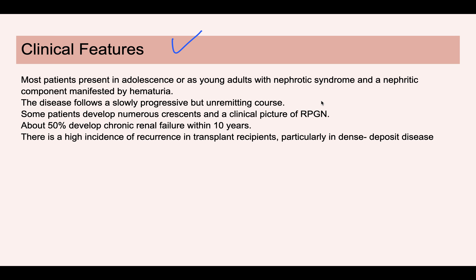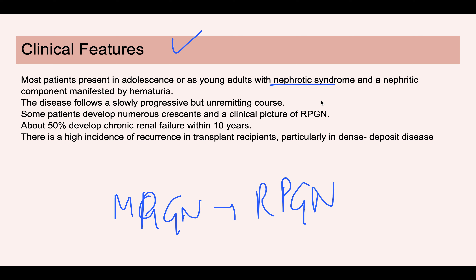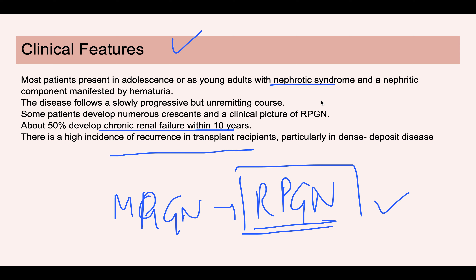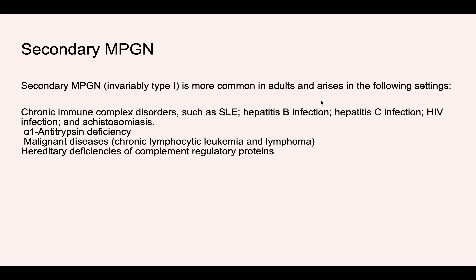Clinically, patients mostly present with nephrotic syndrome; however, some present with a nephritic component and some have an overlapping nephrotic-nephritic picture. The disease can progress from MPGN to rapidly progressive glomerulonephritis (RPGN). Prognosis is poor — approximately 50% of patients develop chronic renal failure. There is also a high rate of recurrence after transplant, particularly in dense deposit disease.